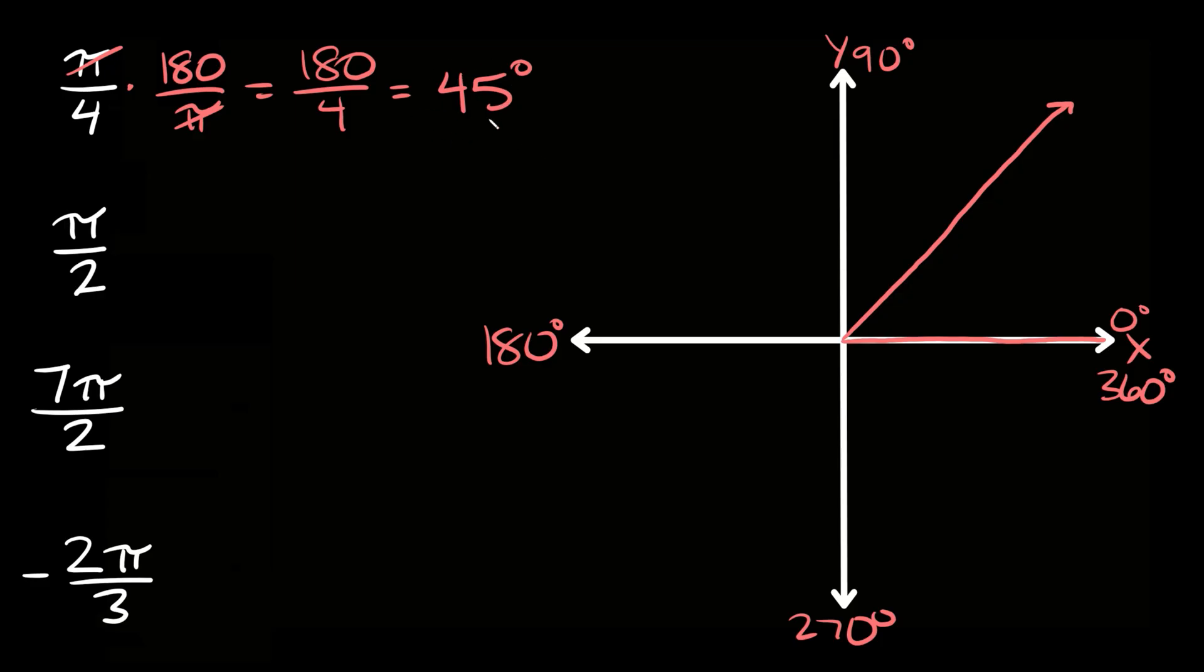Now one last thing I wanted to point out is you can see here we got 45 degrees. This is positive 45 degrees. Now whenever you get a positive angle you rotate in this direction, in the counterclockwise direction, and if you get a negative angle you have to rotate in this direction, in the clockwise direction, the negative direction.